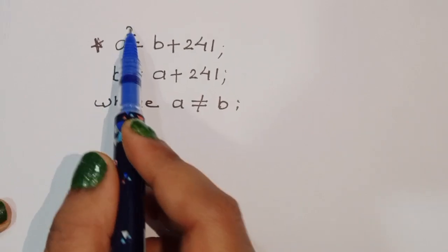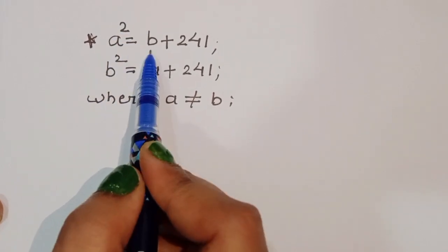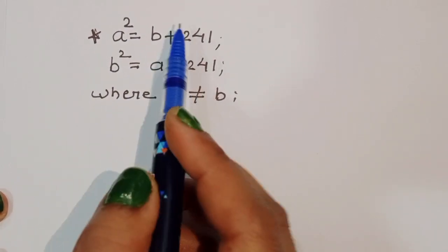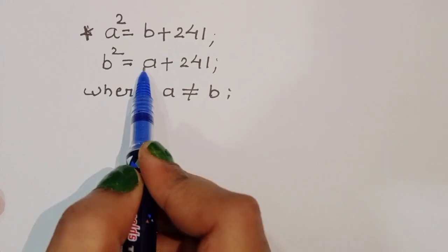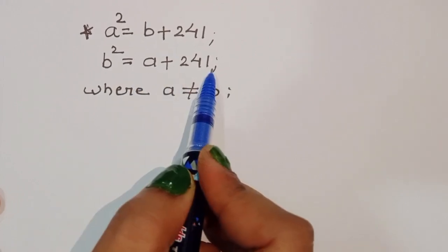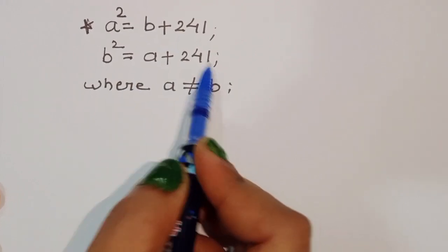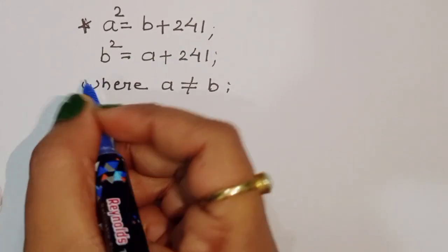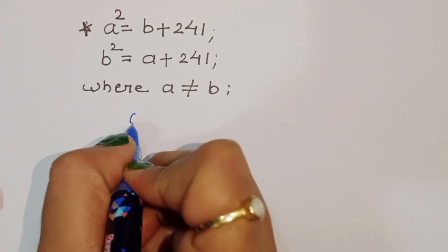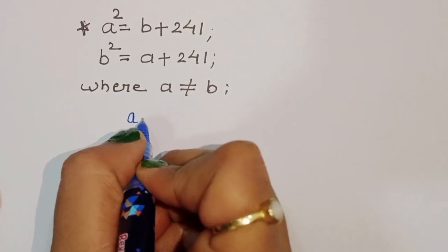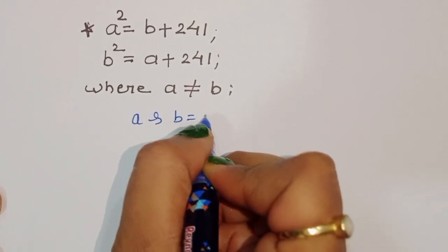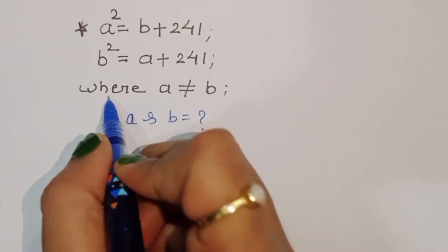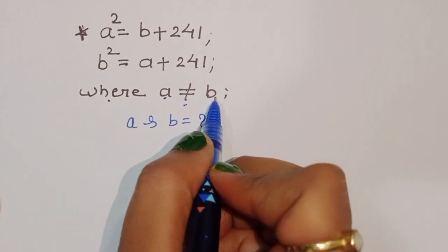The question is given: A squared is equal to B plus 241, and B squared is equal to A plus 241. We have to find out the value of A and B, where the condition is given that A is not equal to B.